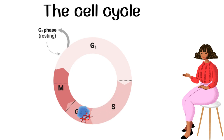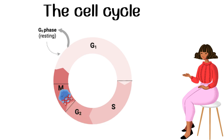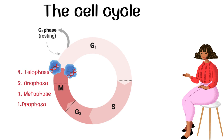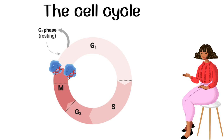The G2 phase is where the cell continues to grow and prepare for division. Finally, the M phase is the stage where the cell physically divides. It consists of several sub-phases: prophase, metaphase, anaphase, and telophase. Mitosis ensures that the duplicated chromosomes are distributed accurately between the two daughter cells.